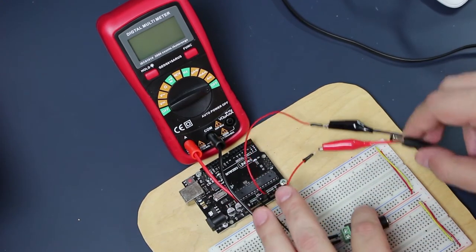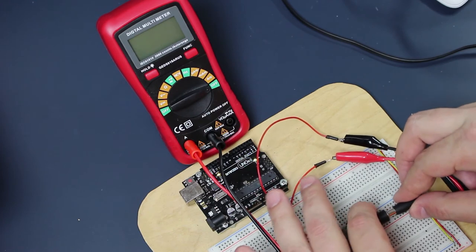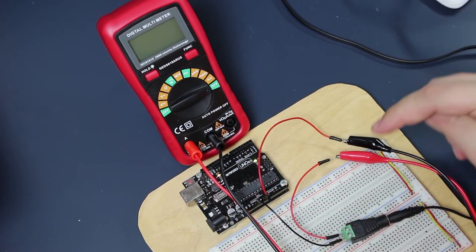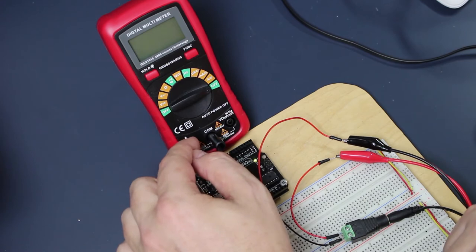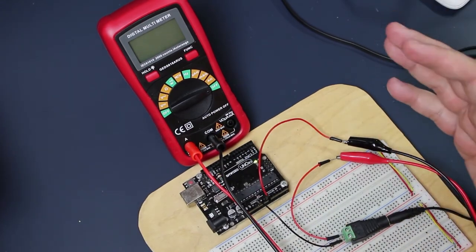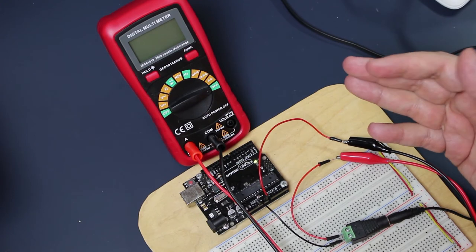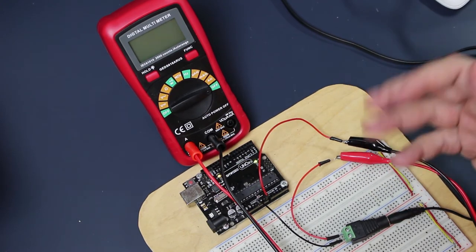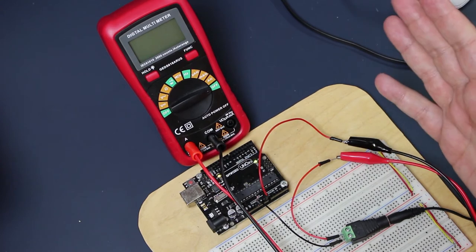Now, if I plug in the power, what's happening is the power goes first through the multimeter and then into the board. We call that that we put the multimeter in series with the power supply or sometimes called in line.